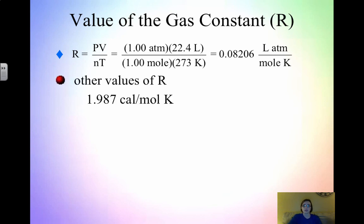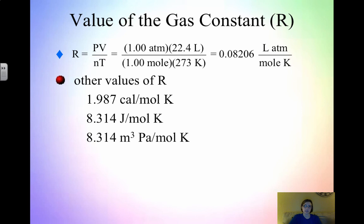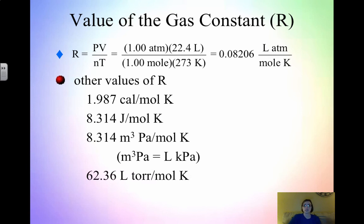There are other values of R depending on your pressure units. If working with calories, R = 1.987. If working with joules — which is the same as working in kPa for pressure — R = 8.314 L·kPa/mol·K. If pressure is in Torr, use R = 62.36 L·Torr/mol·K. All three values are provided on your equation sheet, so you just need to know where to find them and how to use them.